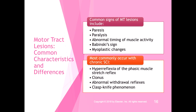That's the key thing with motor tract lesions — they're not going away; you have to learn how to deal with them. Common signs of motor tract lesions include paresis, paralysis, abnormal timing of muscle activity due to loss of fractionation, positive Babinski sign, and myoplastic changes like contractures. Most commonly with chronic spinal cord injury, you get hyperreflexia of the phasic muscle stretch reflex, clonus, abnormal withdrawal reflexes, and the clasp knife phenomenon.